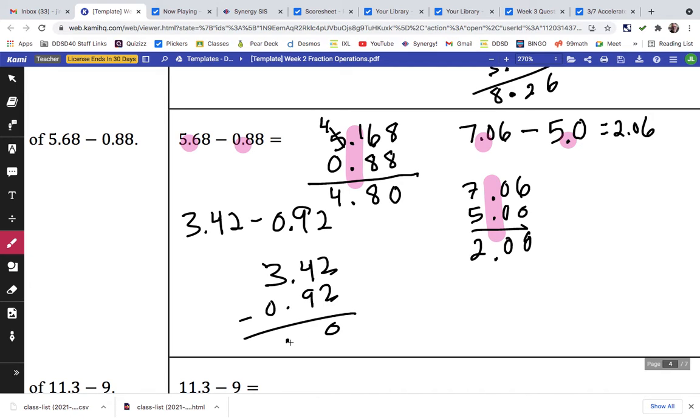2 minus 2 is 0, the decimal point goes right there. I can't take 9 from 4, so I have to borrow and rename. 14 minus 9 is 5, 2 minus 0 is 2, so 2.50, we could write that as 2.5.